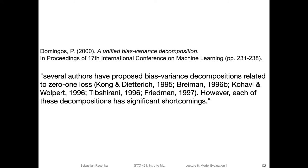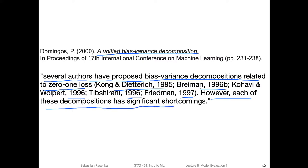There are several attempts for that. The next couple of slides are heavily based on Pedro Domingos' work, who also refers to previous work. Pedro Domingos wrote a paper called 'A Unified Bias-Variance Decomposition,' where he tried to unify all the different aspects and how to formalize the general way that we can decompose a loss function into bias and variance. As he said in his paper, several authors have proposed bias-variance decompositions related to zero-one loss — five papers, actually. However, each of these decompositions has significant shortcomings.